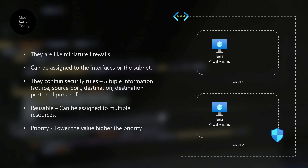These rules contain five-tuple information: the source, source port, destination, destination port, and the protocol. They can be assigned to the network interface of the VM or to a subnet. The security group definitions that you write can be reused, but keep in mind that you cannot assign multiple security groups to one interface card. When you define security rules, you also provide a priority — the lower the number, the higher the priority.